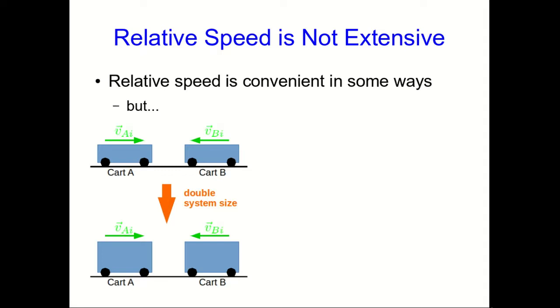Think about doubling the system size of a pair of colliding carts. Well, when you double the system size, you have to keep everything the same except the system size, and so in particular you keep their velocities the same. Well that means the relative speed hasn't changed when you double the system size, and so relative speed isn't extensive.